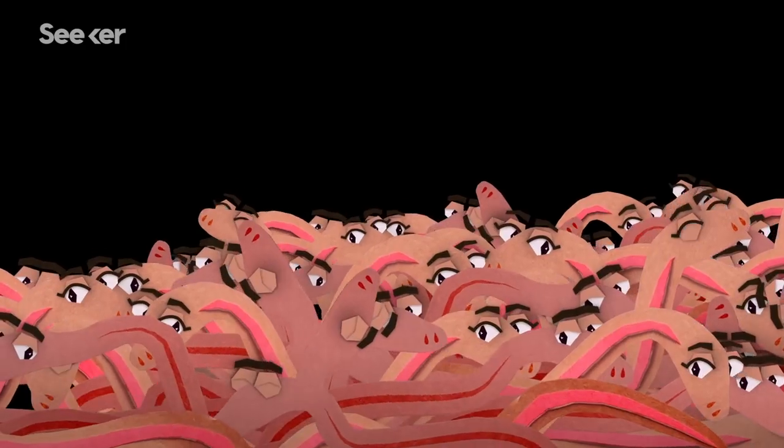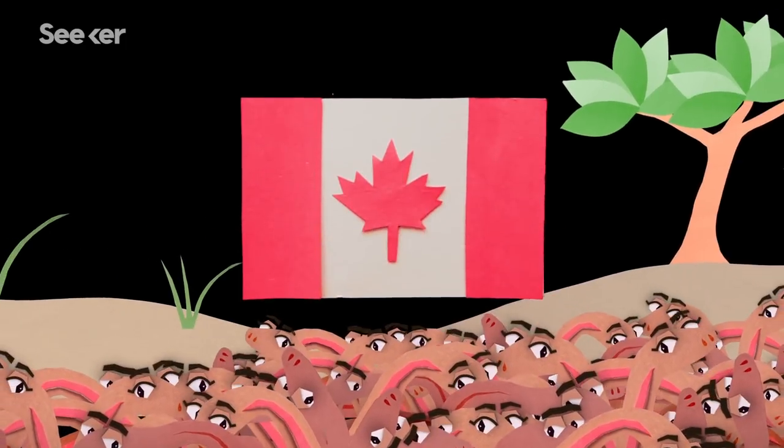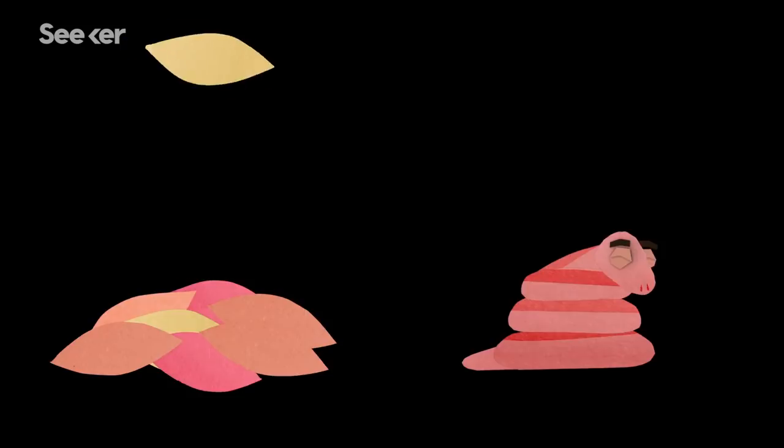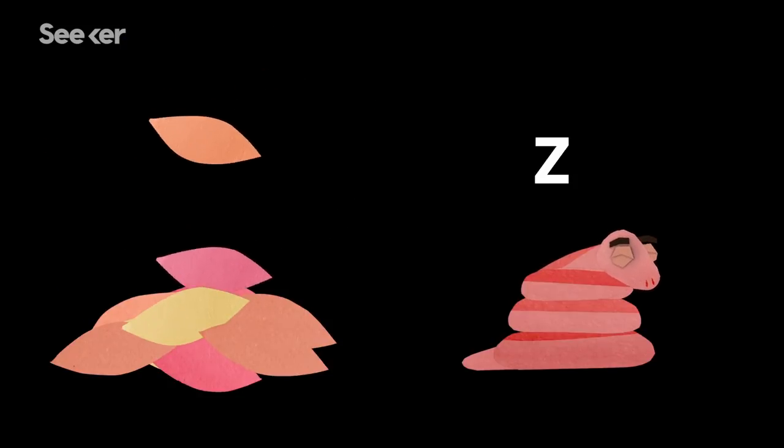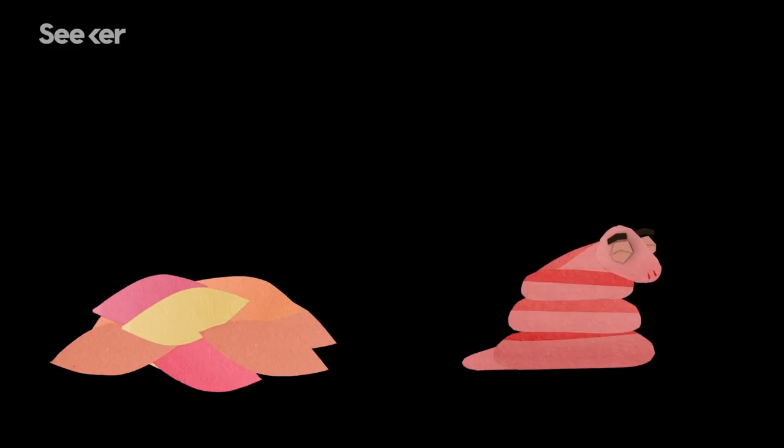Red-sided garter snakes can be found in the vast icy plains of central Canada. Each fall, the entire population settles down for a long winter's nap.